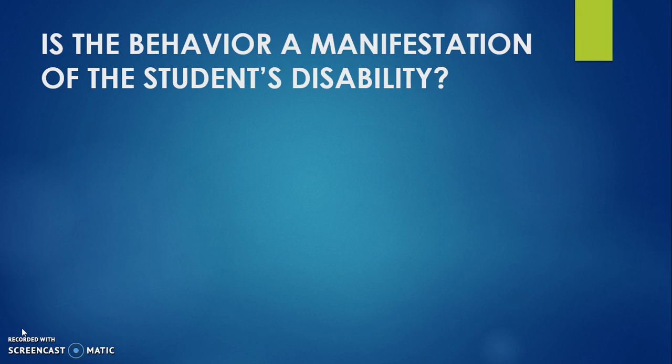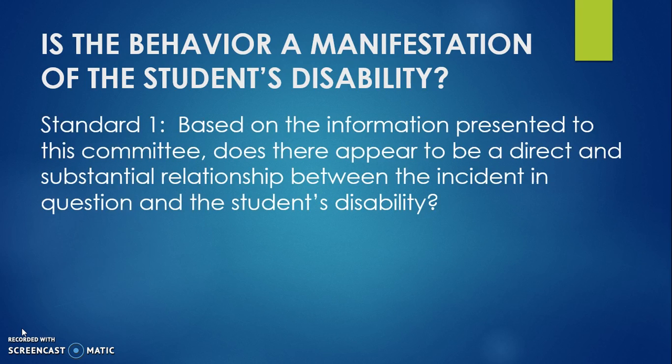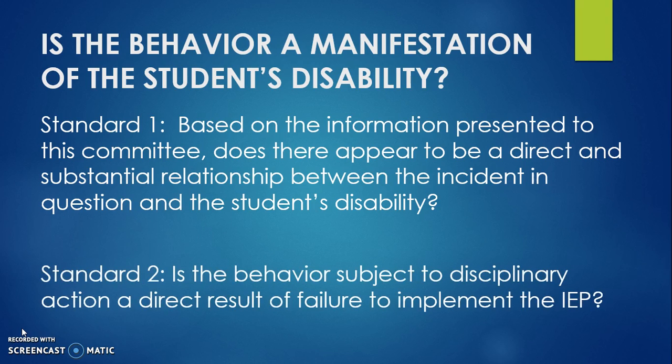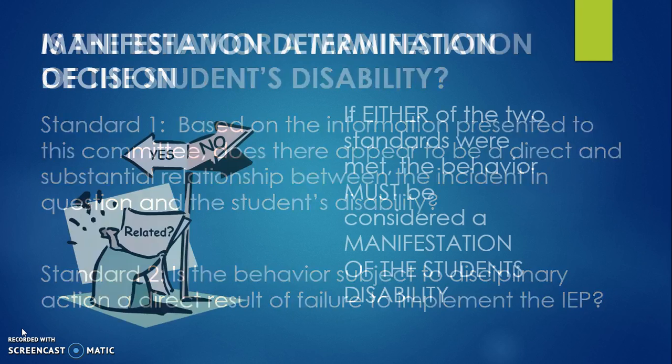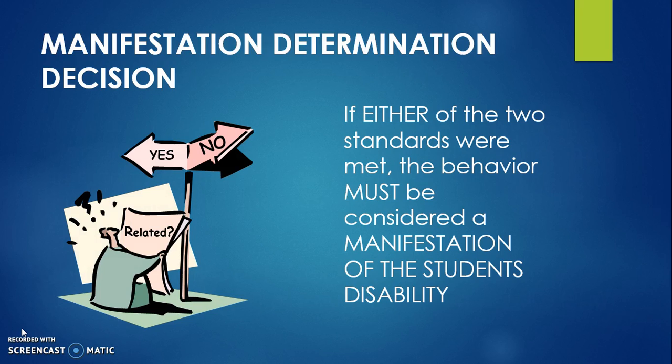The following two standards must be considered to determine if the behavior is a manifestation of the student's disability. Standard 1: Based on the information presented to the committee, does there appear to be a direct and substantial relationship between the incident in question and the student's disability? Standard 2: Is the behavior subject to disciplinary action a direct result of failure to implement the IEP? If the team answers yes to either standard, then the behavior is determined to be a manifestation of the student's disability.